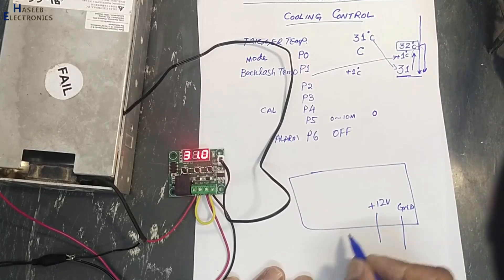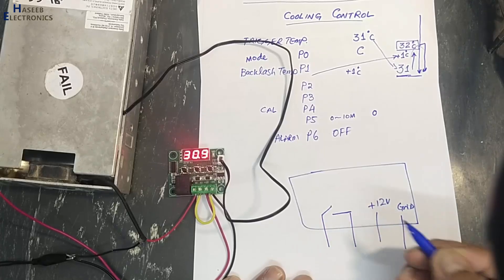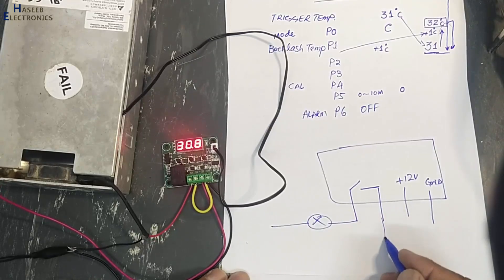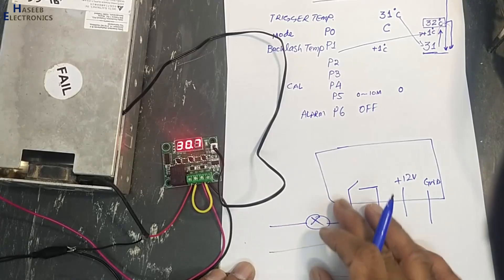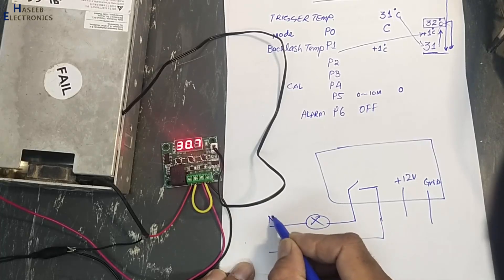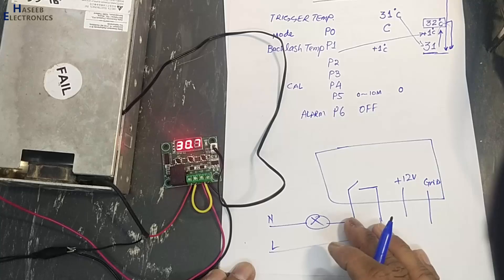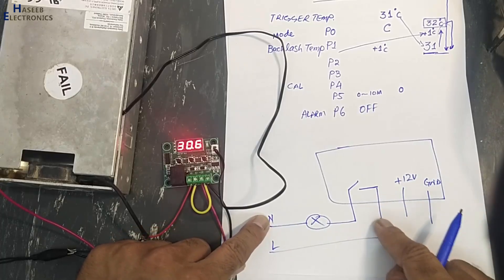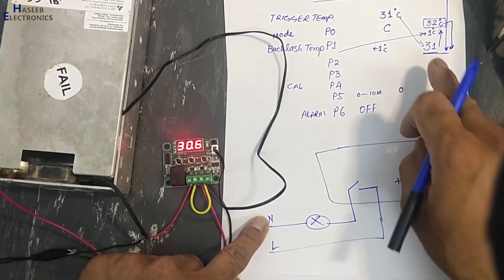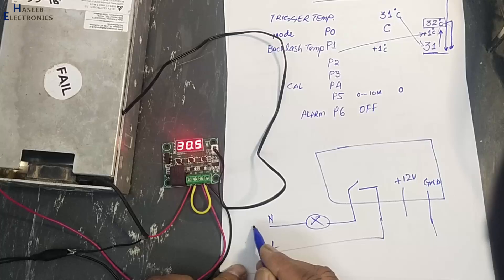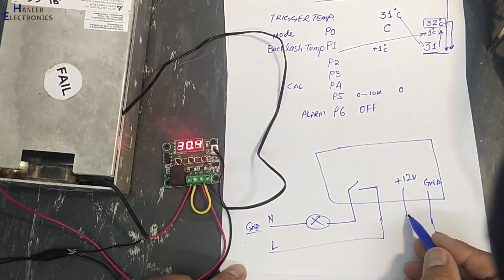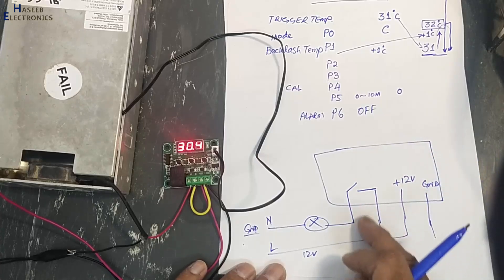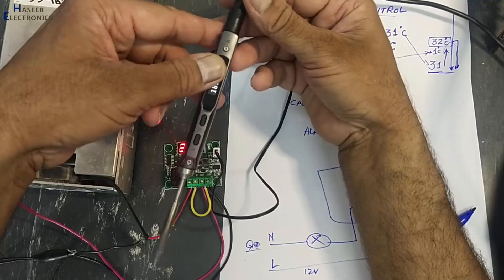For wiring: positive 12 volts connects here, and here is the relay output. We can connect any fan to the relay. Positive 12 volts goes in, the relay switches the fan. In my case I am using a 12-volt fan from this power supply — I connected ground here and the positive voltage here.